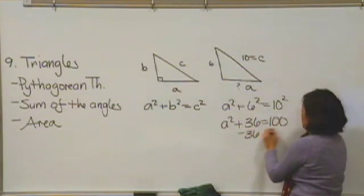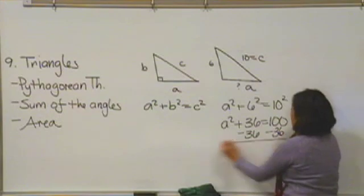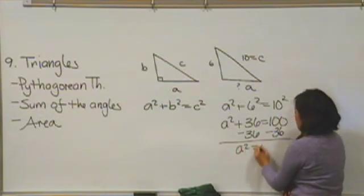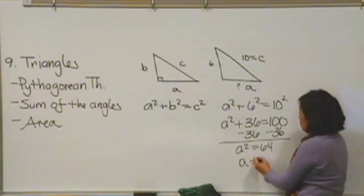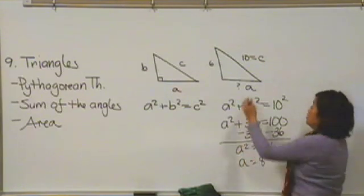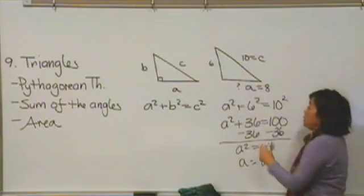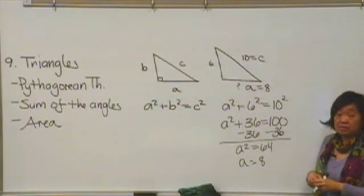I'll subtract 36 from both sides. A squared is equal to 64. So I know by taking the square root of both sides, what number squared gives me 64? A has to be 8. And so this side here would be 8 units long. So that's the Pythagorean theorem.